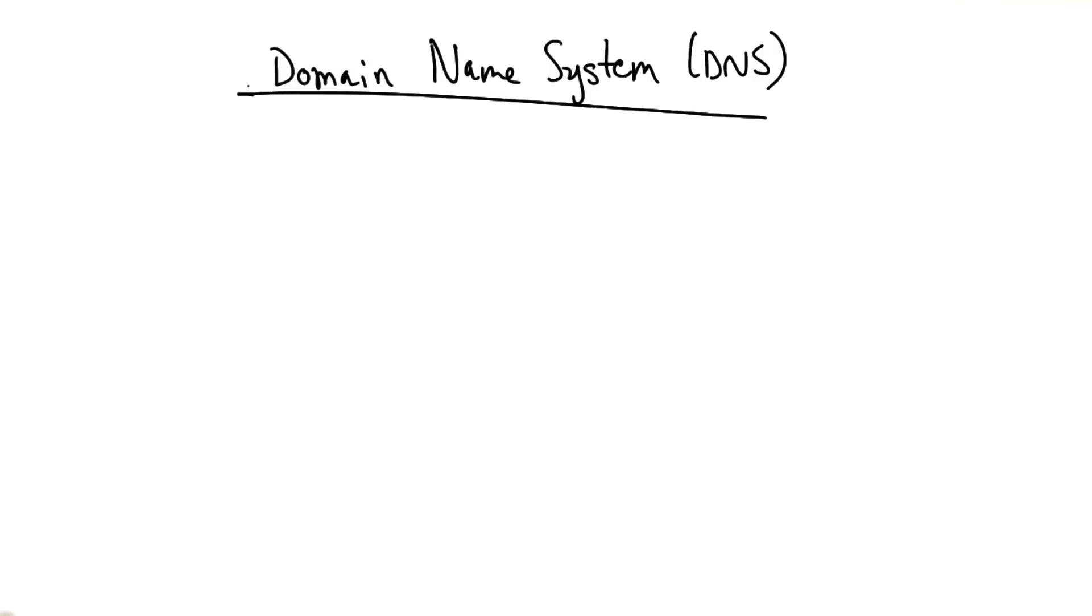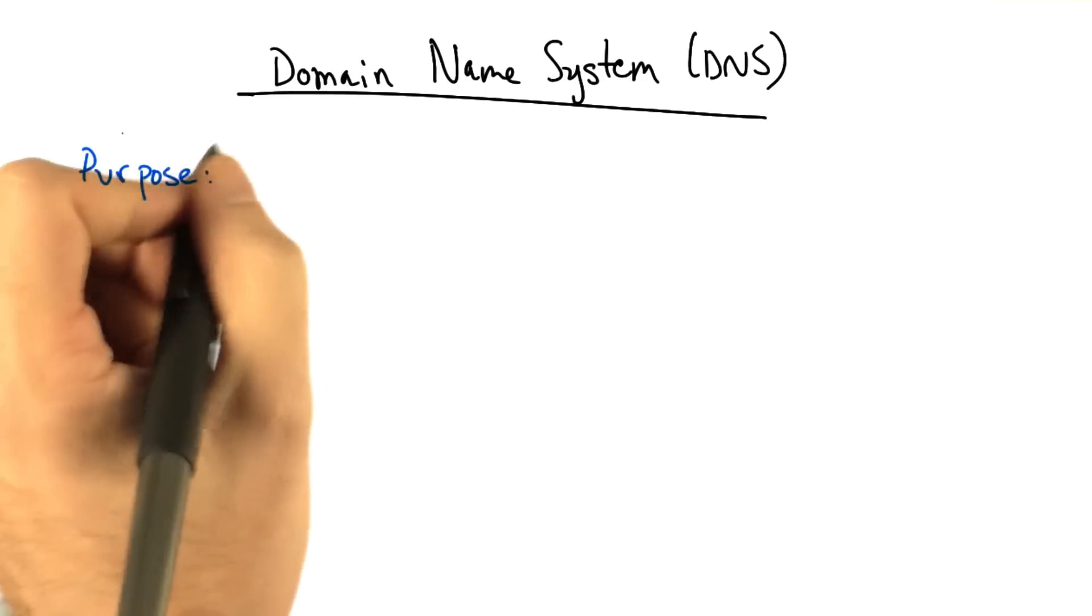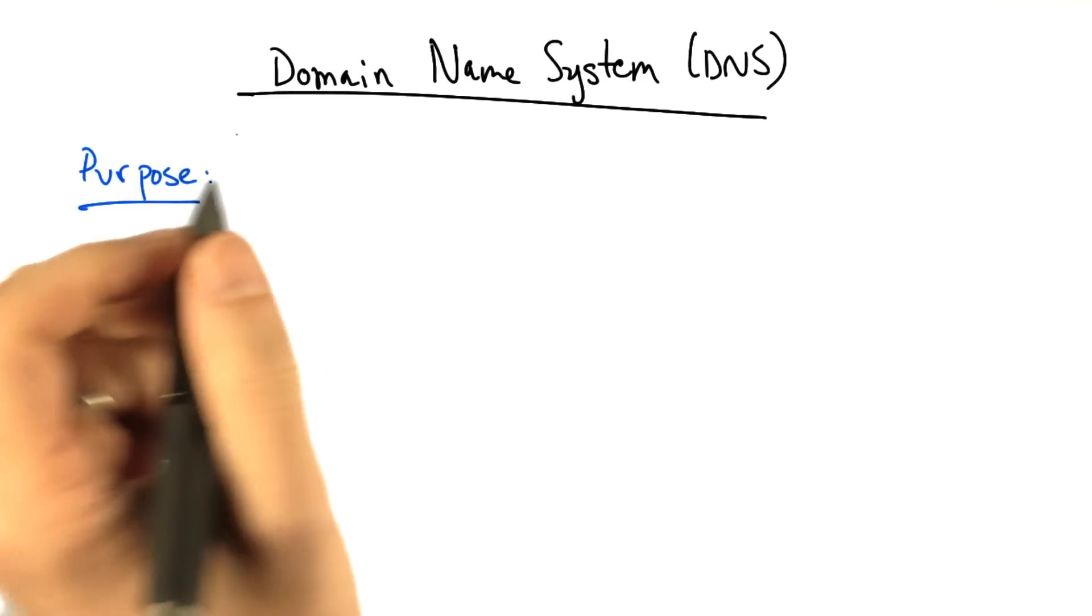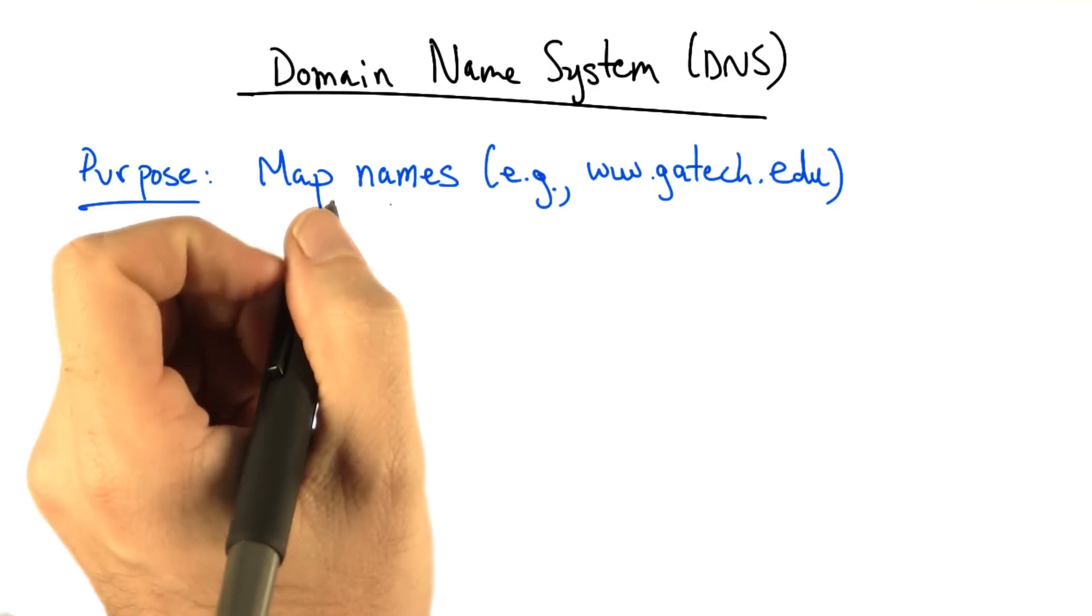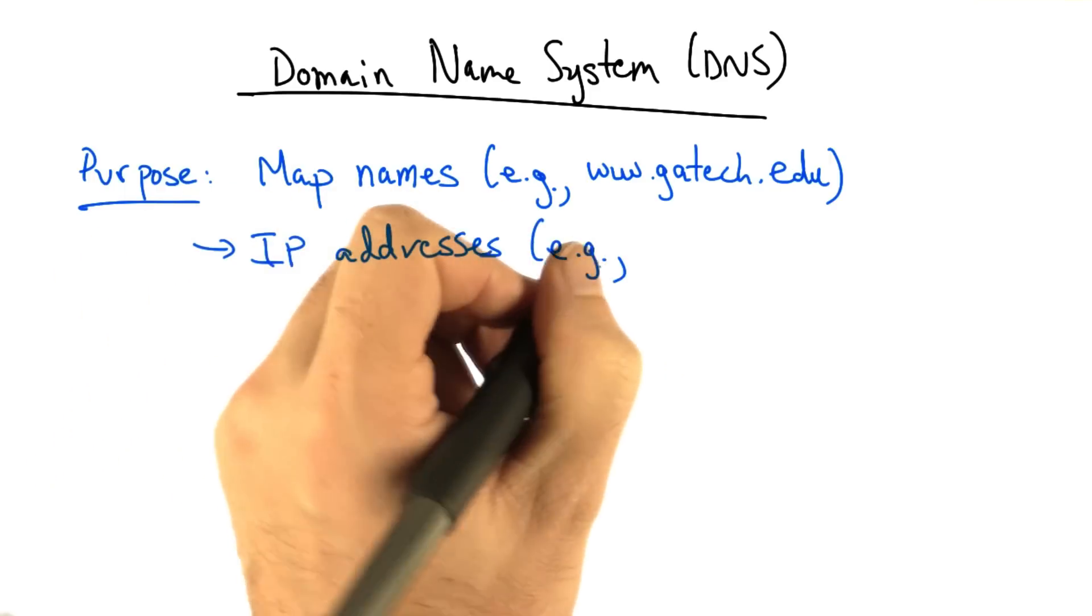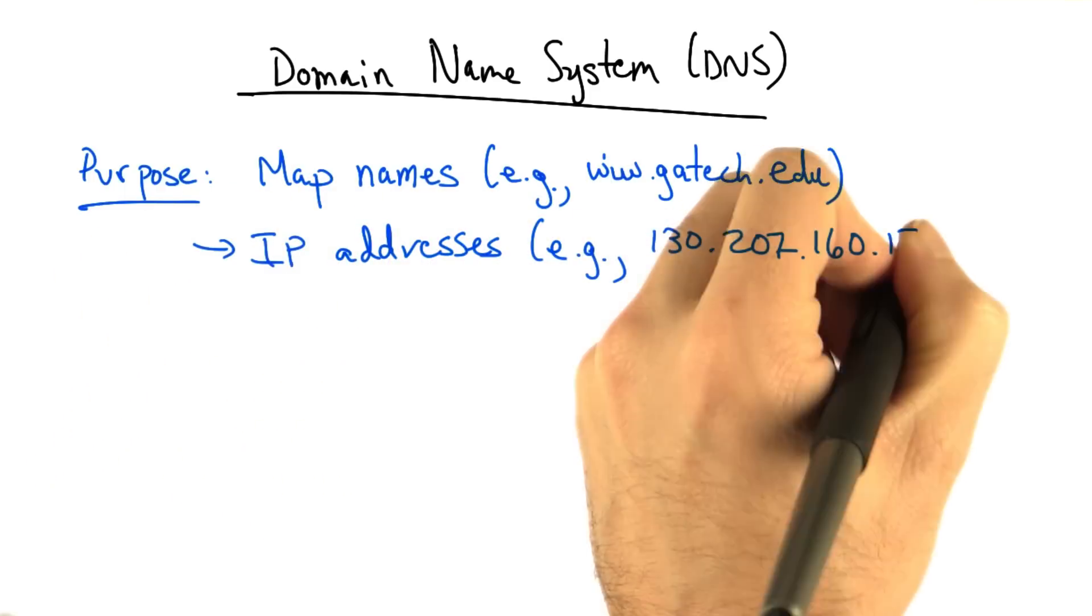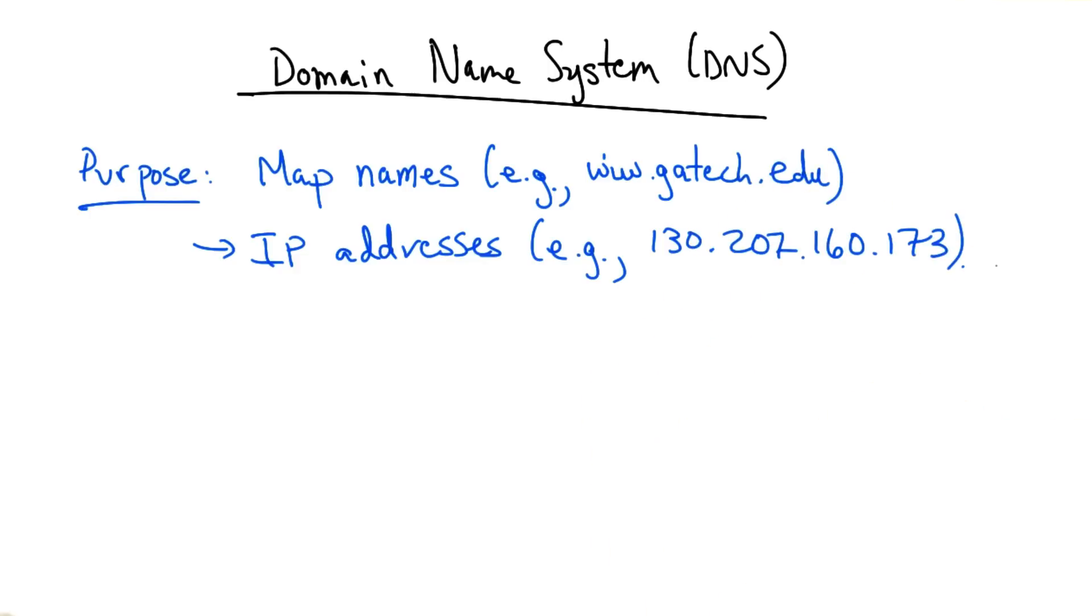We'll now have a look at the domain name system, or DNS. The purpose of the domain name system is to map human readable names, such as www.gatech.edu, to IP addresses, such as 130.207.160.173.